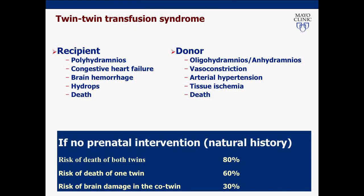The donor twin, on the other hand, has decreased amount of blood and volume inside the vessels. This twin will then reduce or stop urinating in order to preserve the volume inside the body. Therefore, we will observe reduced amount of amniotic fluid, which we call oligohydramnios. If the situation progresses, this twin will have ischemic events in the heart and brain, which will lead ultimately to death.